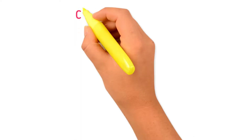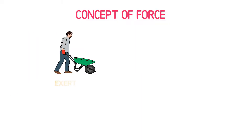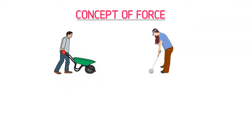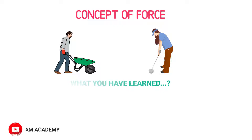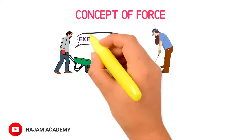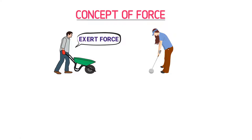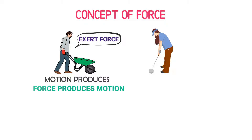Firstly, let me quickly revise the concept of force. For example, when you exert force on a wheelbarrow, it starts moving. Secondly, consider that a fast golf ball is moving towards you. You can stop this fast moving ball with the help of a stick. From these two examples, when you exert force on a wheelbarrow, motion is produced. Thus, you can say that force produces motion in a stationary object.